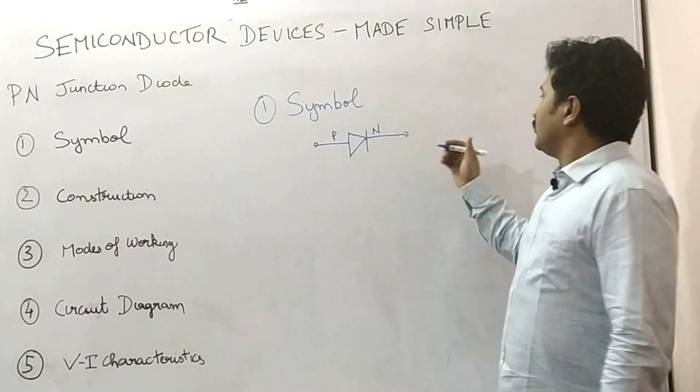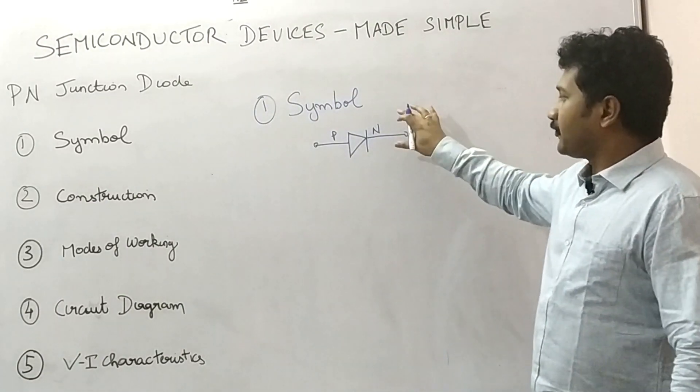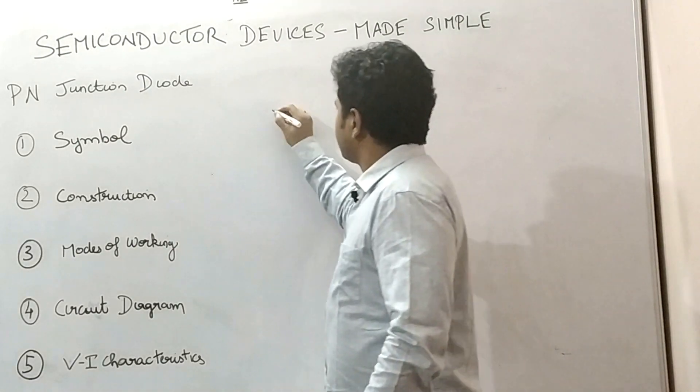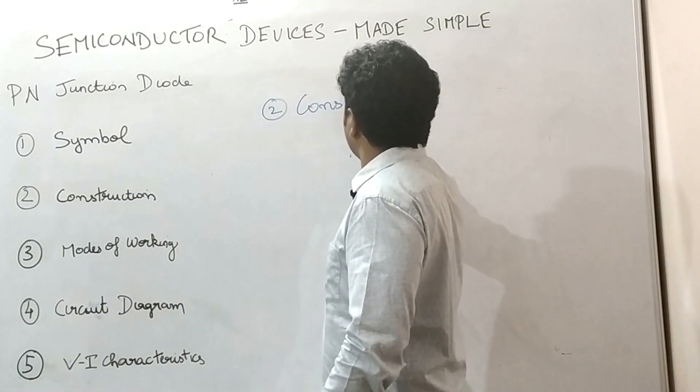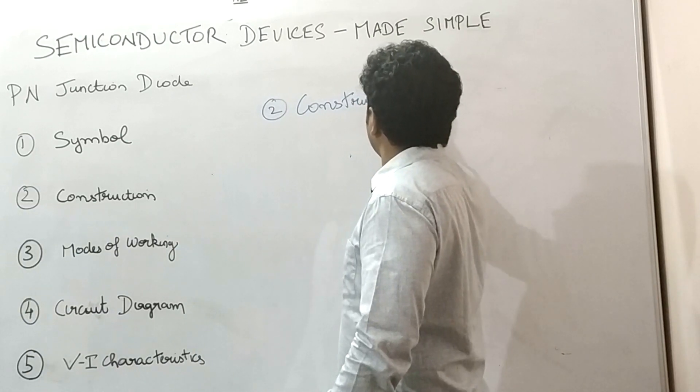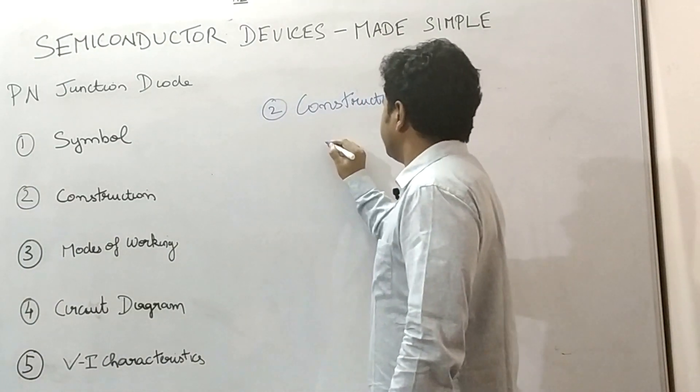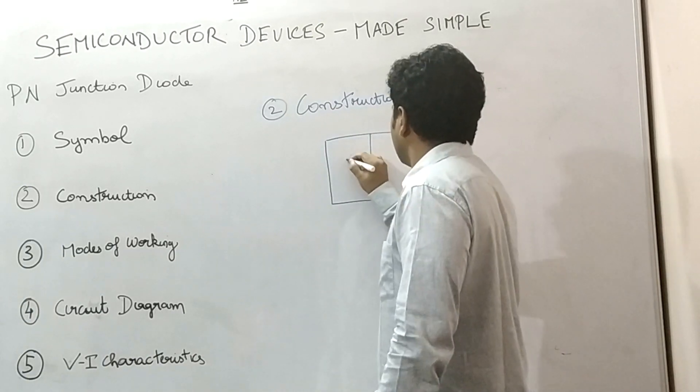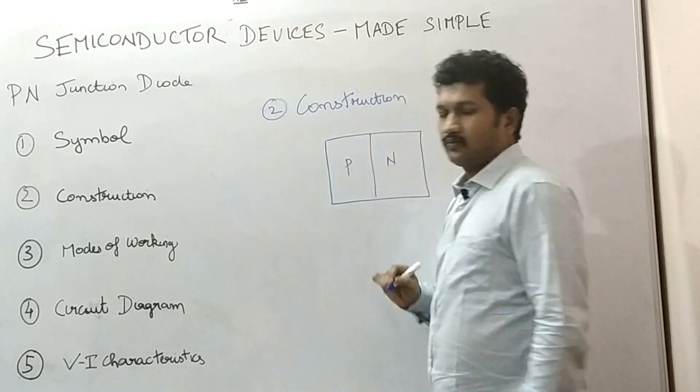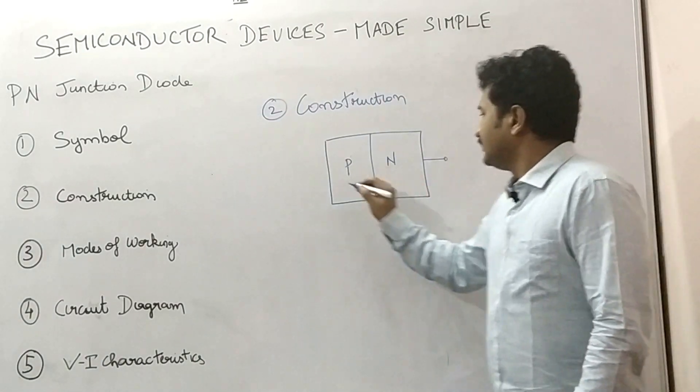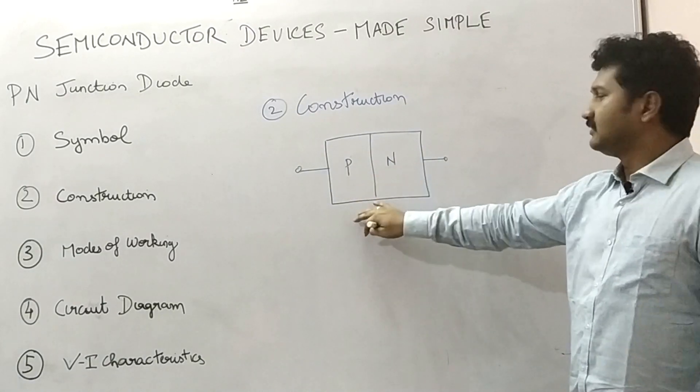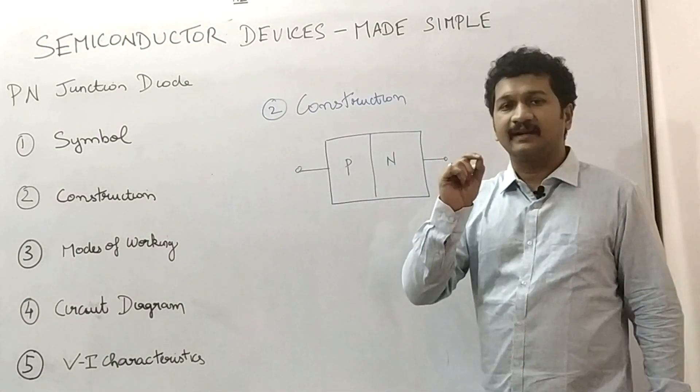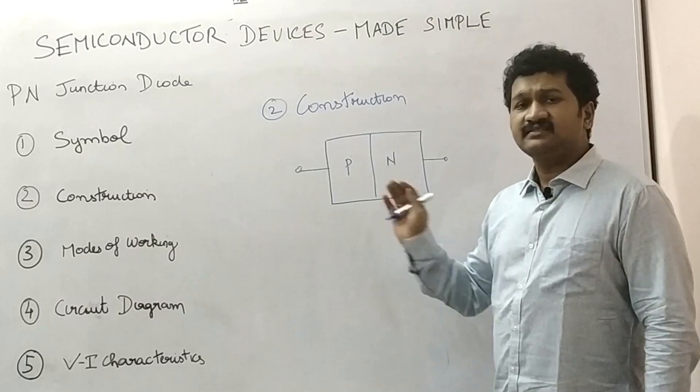This is a component symbol. What is the makeup of that? What is it made up of? That we will see in construction. When you come to construction, this is the PN junction diode with the terminals coming from both these layers. We have to call them as layers: P layer and N layer.